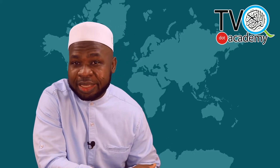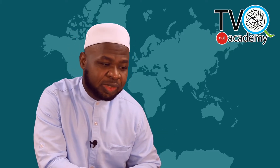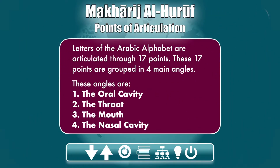With that, we can build on to all the points of articulation of the letters. The letters of the Arabic alphabet are articulated through 17 points, based on the classification of Imam Ibn al-Jazari. We will be doing our clips on this basis — each point will be highlighted in a clip.